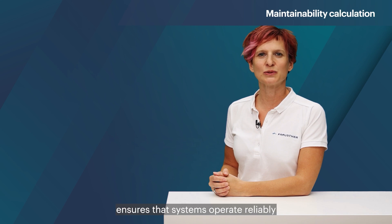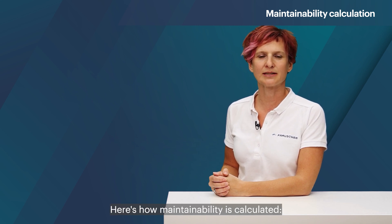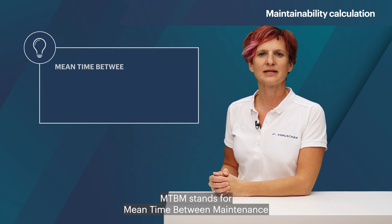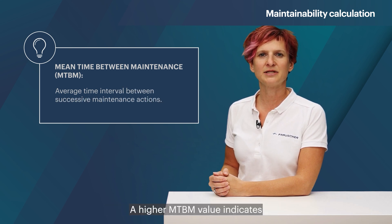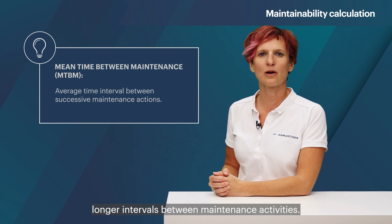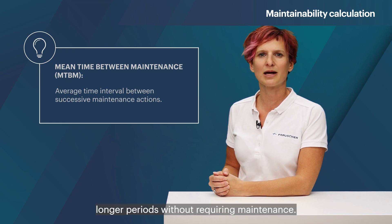Effective maintainability ensures that systems operate reliably and safely while minimizing downtime and maintenance costs. Here is how maintainability is calculated. MTBM stands for Mean Time Between Maintenance and represents the average time interval between successive maintenance actions. A higher MTBM value indicates longer intervals between maintenance activities, suggesting that the system or component can operate for longer periods without requiring maintenance.